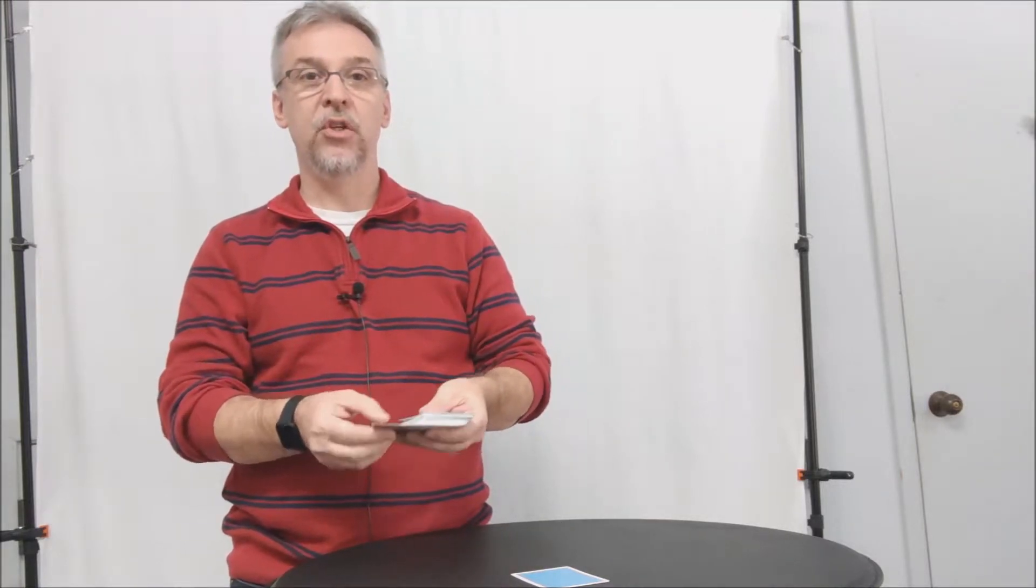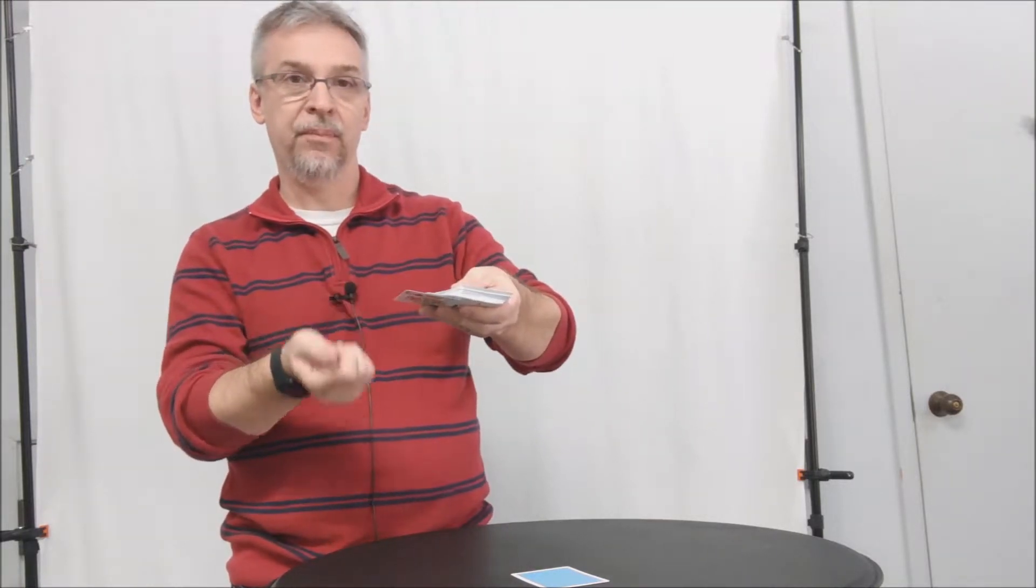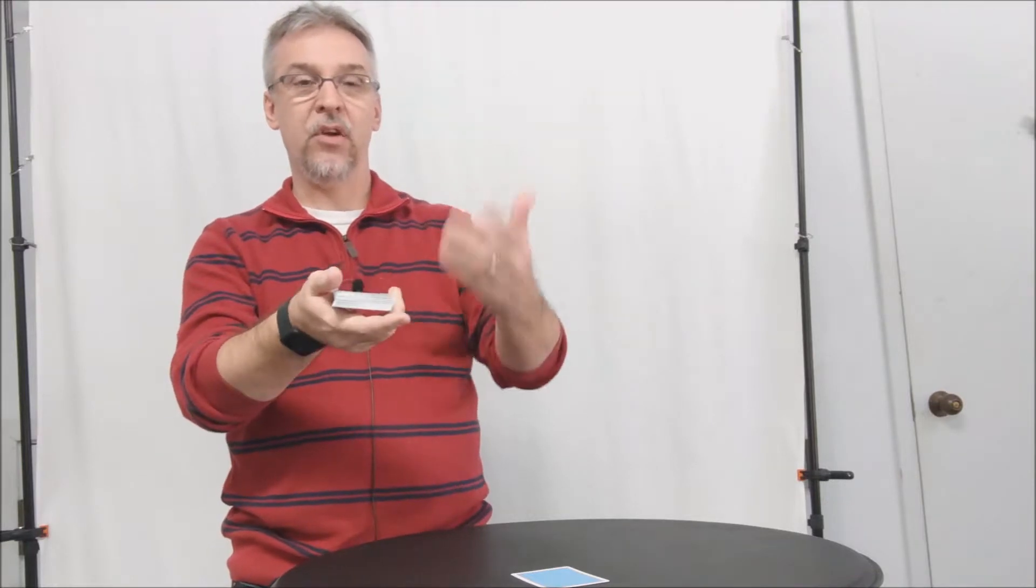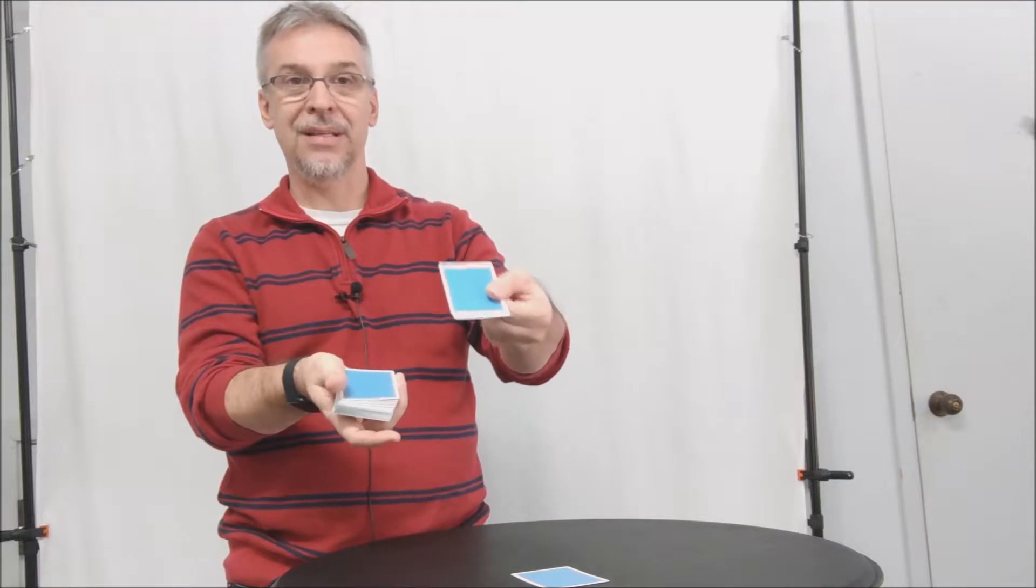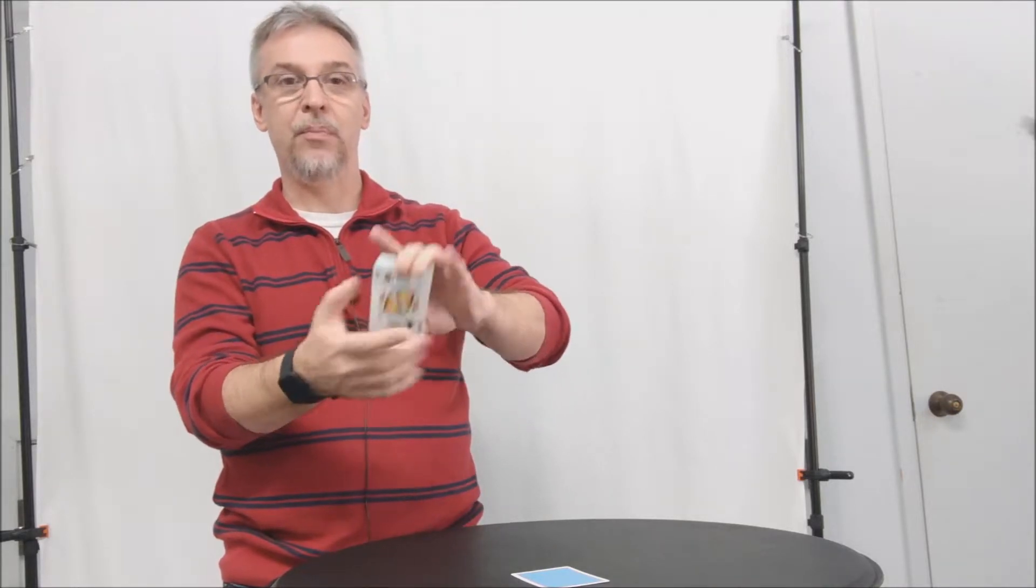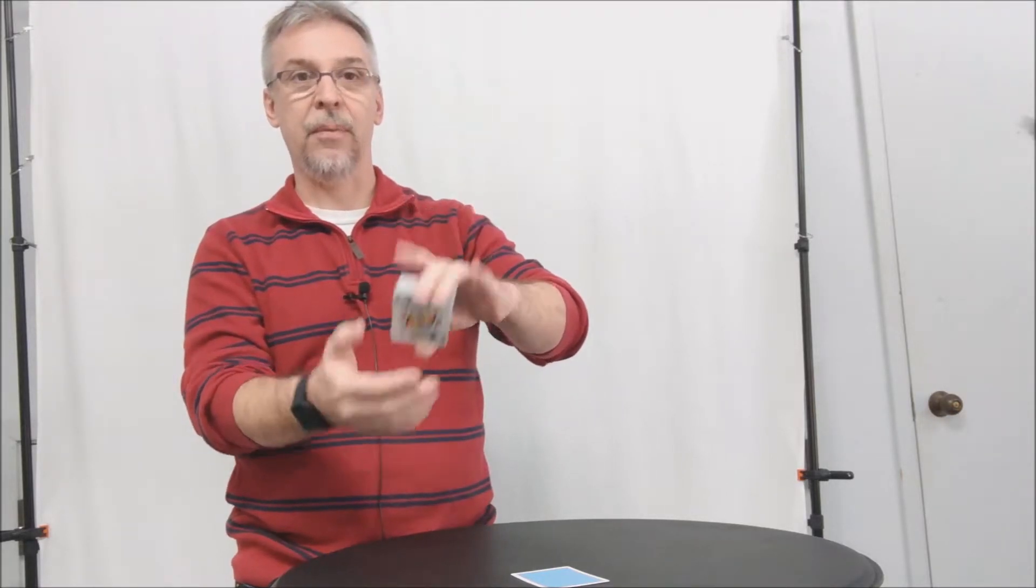What you're going to do is find the bottom card. When you're holding a deck of cards in your hands and it's face down like this, the top card is the card on top that's face down and the bottom card is the card that's face up.